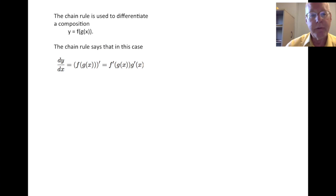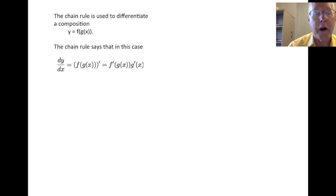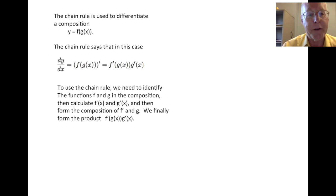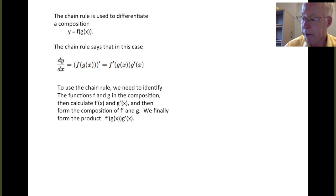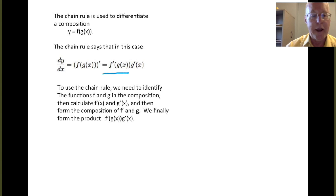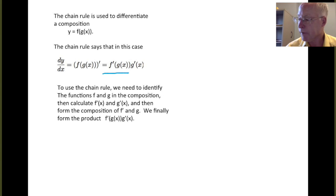The chain rule says that for such constructions, if y equals f of g of x, then dy/dx or f of g of x prime is given by f prime of g of x times g prime of x. We first need to identify the two functions f and g in the composition, then calculate f prime and g prime, and form the composition of f prime and g. Once we form that composition, we multiply that result by g prime of x, and this gives us the derivative.